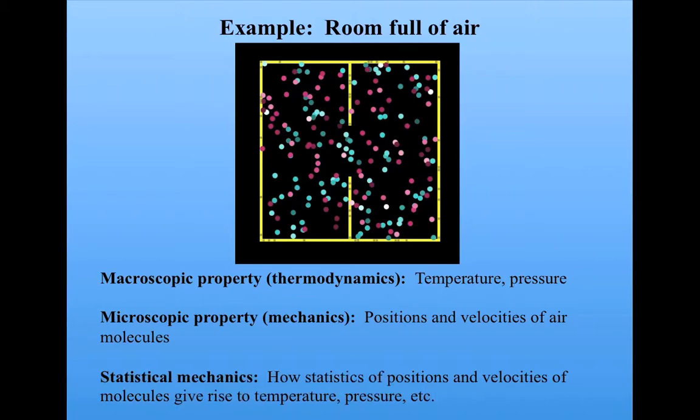Statistical mechanics would bridge these two extremes and would tell us how the statistics of the positions and velocities of molecules give rise to temperature, pressure, etc. So it's about how the statistics of microscopic properties give rise to macroscopic properties.